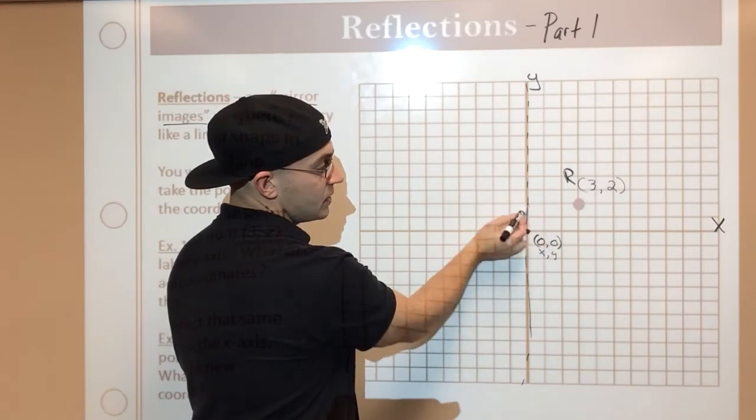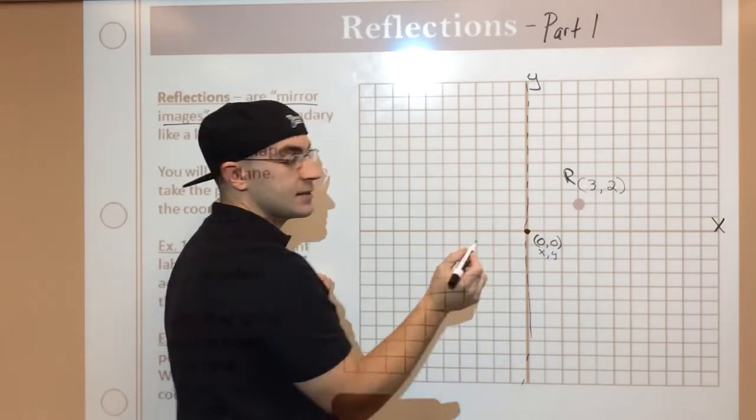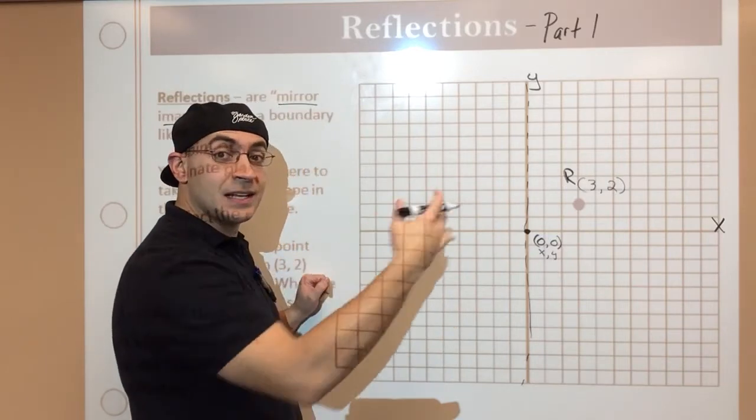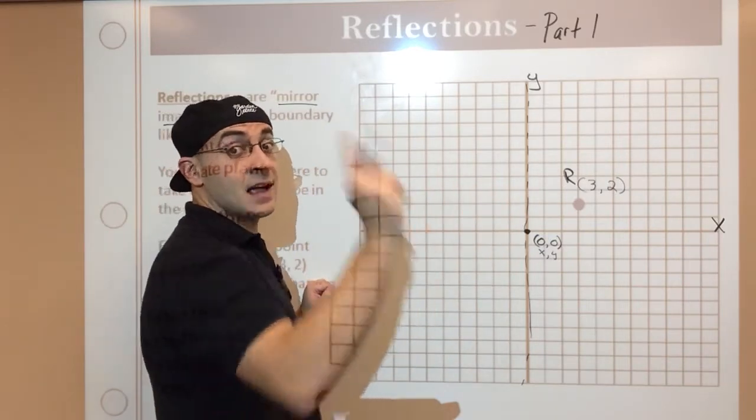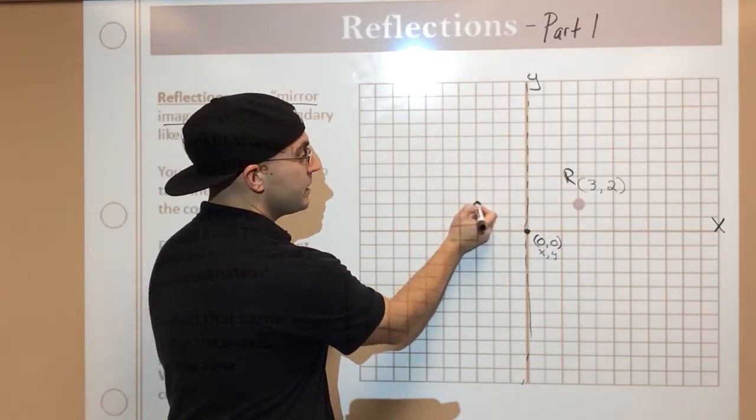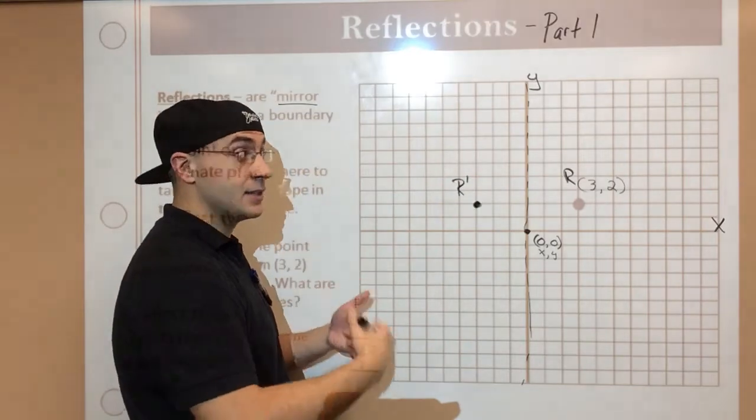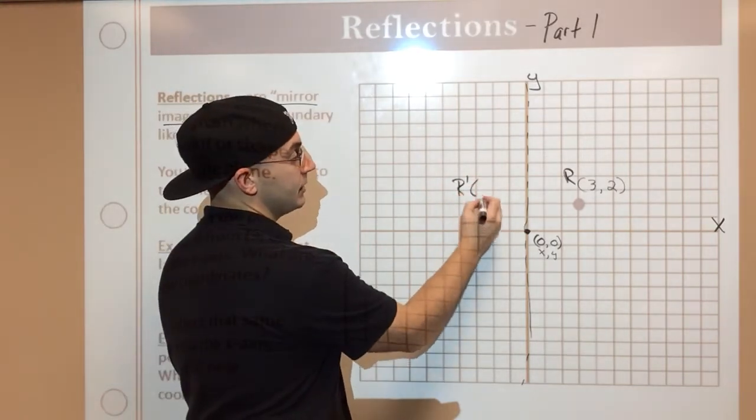So for instance, this point is 1, 2, 3 units to the right of the Y-axis. So how many units do you think it needs to be from the left of the Y-axis? Three, exactly. 1, 2, 3. This is my new point, and it's R prime. Remember, I need to label it as the new point, and we'll label it.